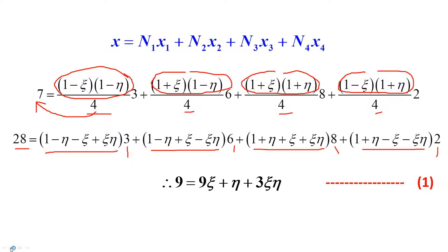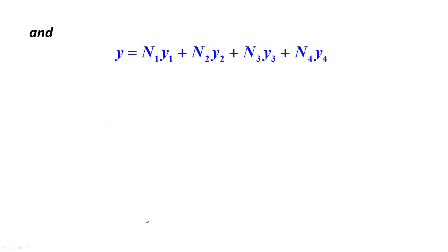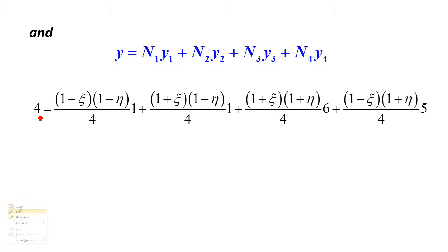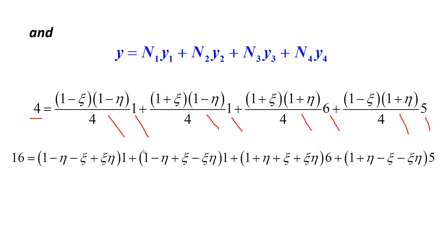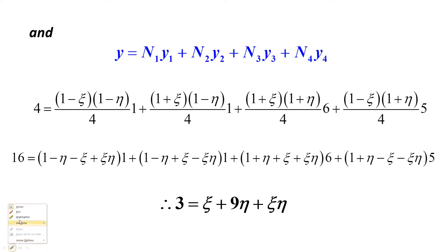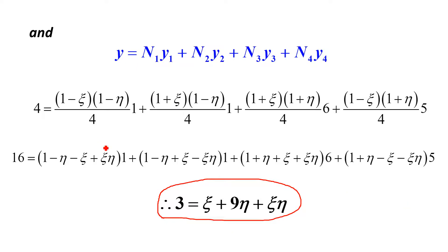Similarly, from the second geometry equation y = N1·y1 + N2·y2 + N3·y3 + N4·y4, substituting y=4 along with the shape functions and nodal y-coordinates y1 to y4, after expanding and simplifying all the brackets, we obtain equation 2: 3 = ξ + 9η + ξη.